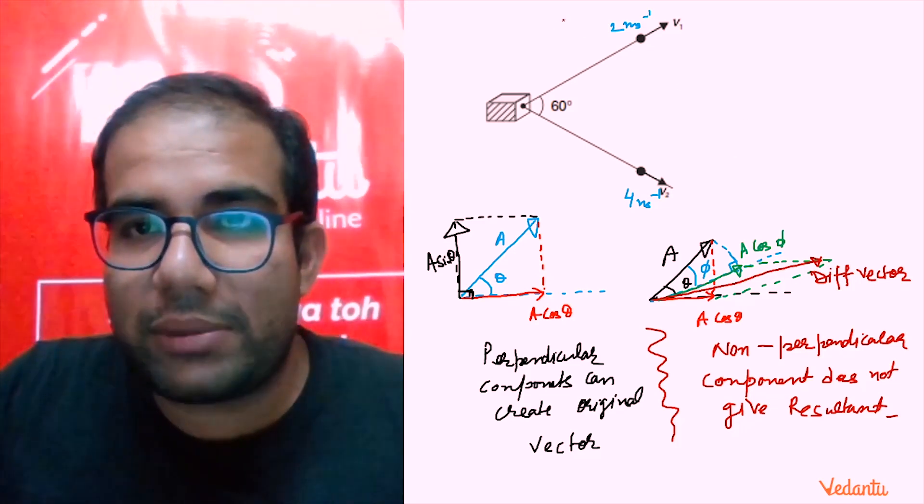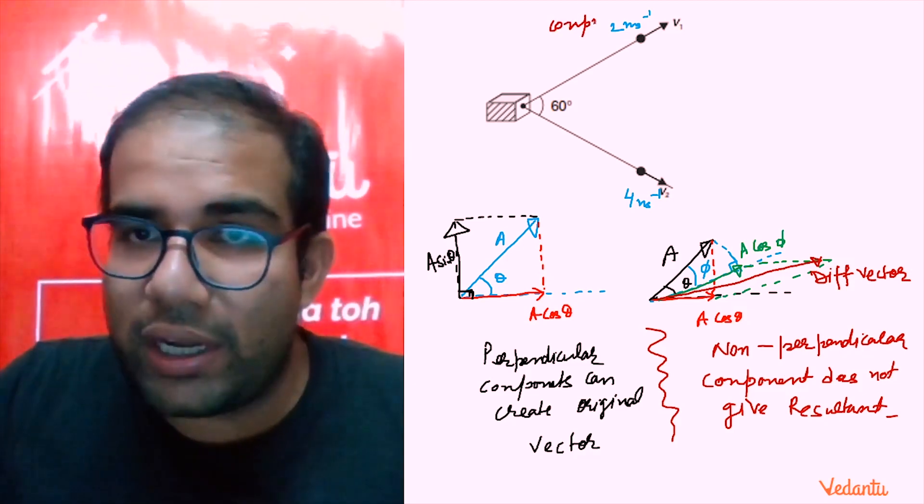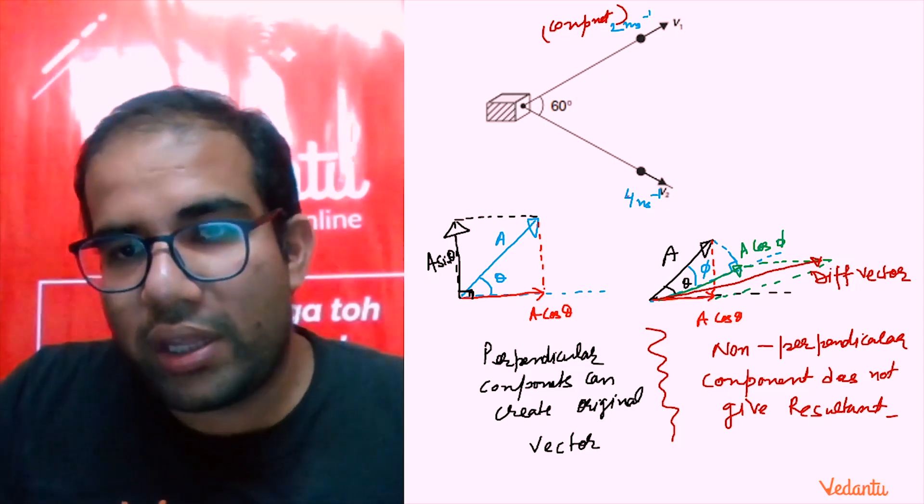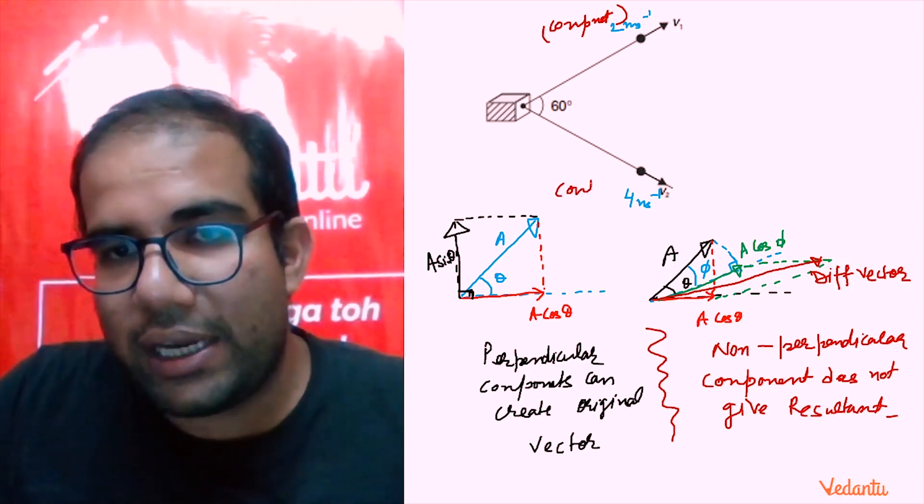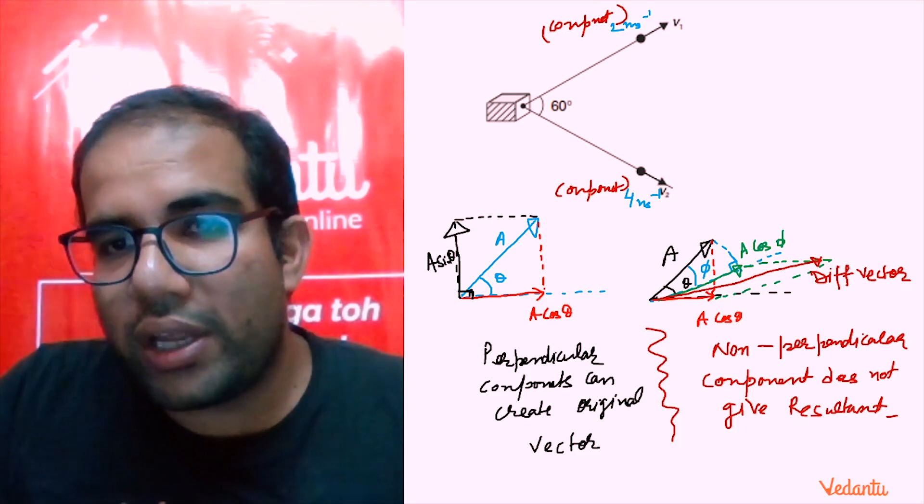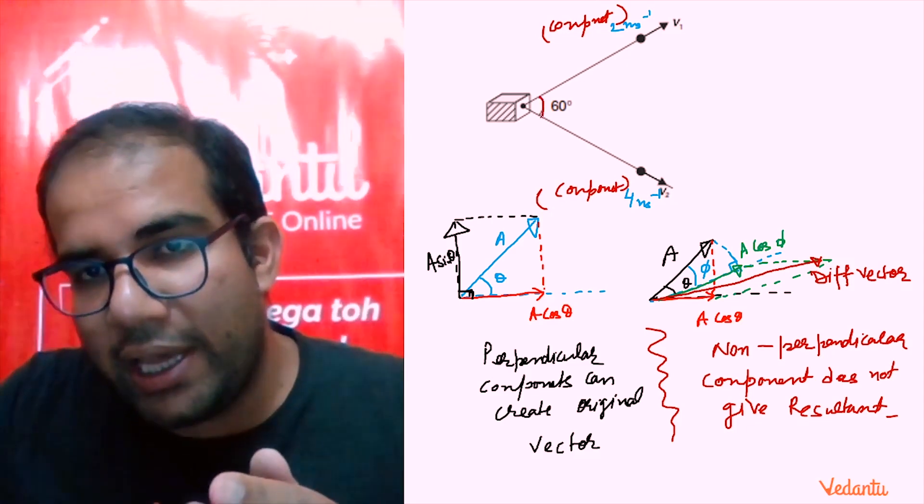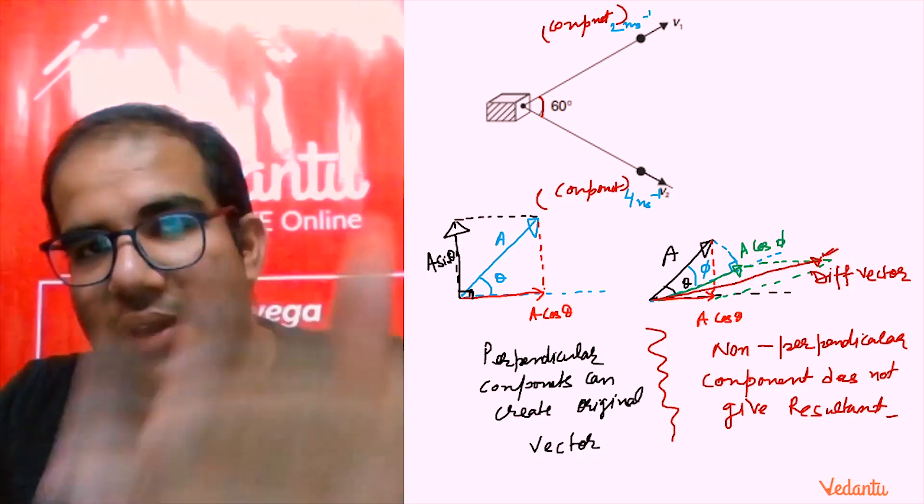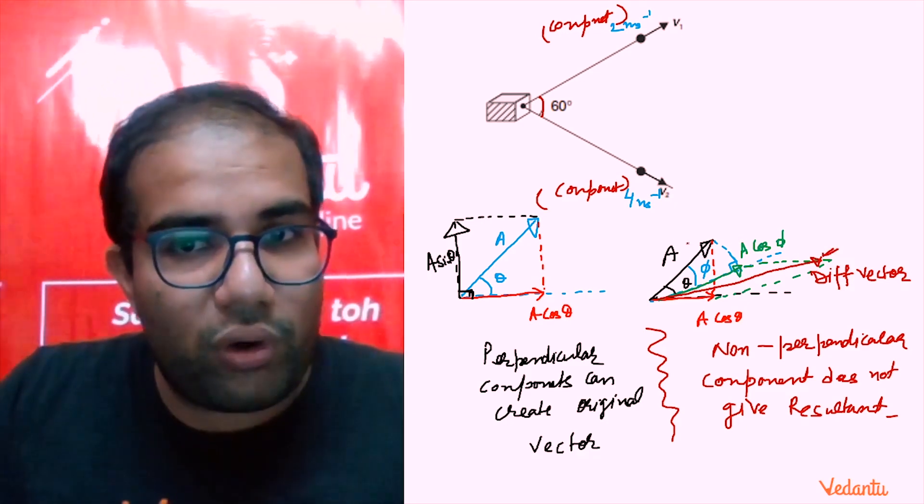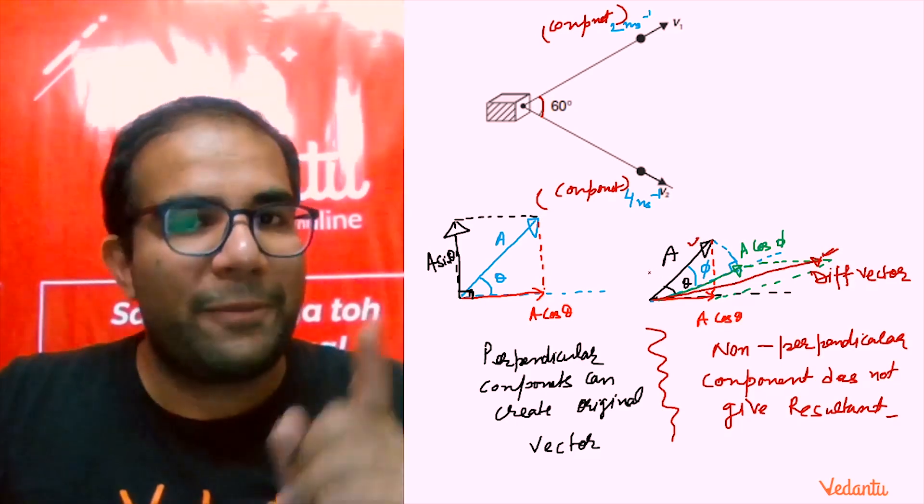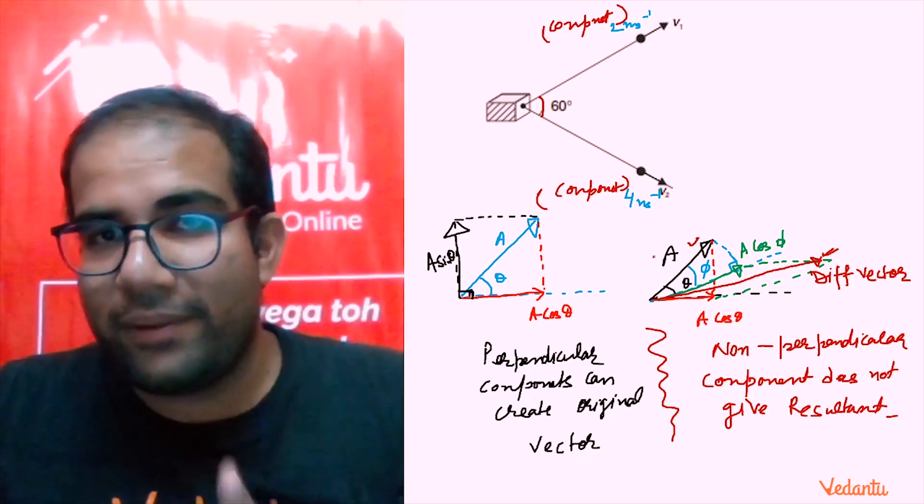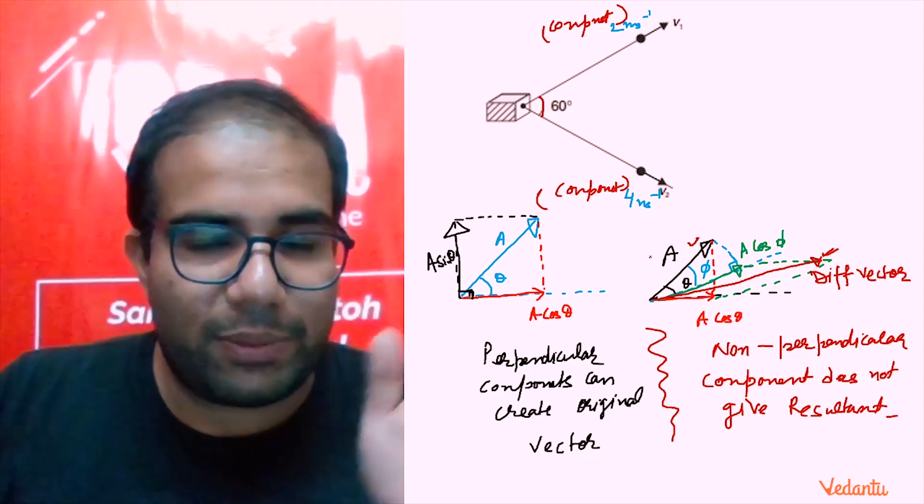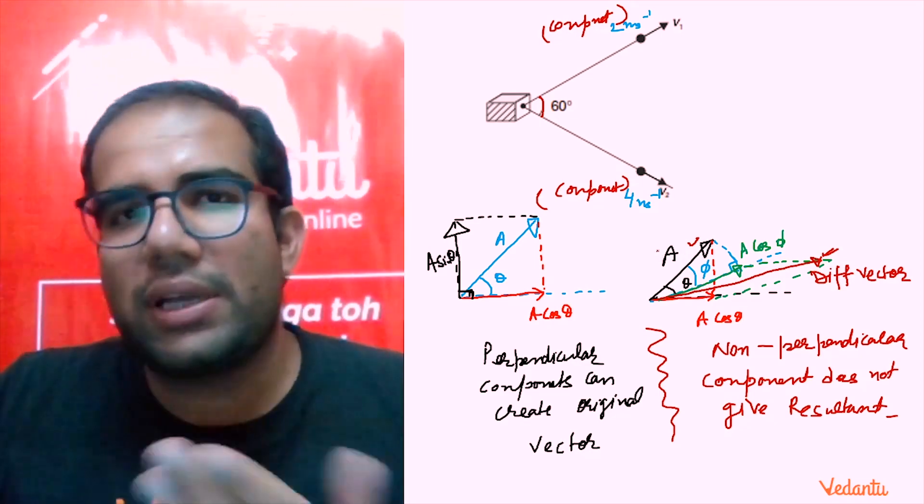What I wanted to say is that non-perpendicular components do not give the resultant. That is the logic of the question. Believe me, I have asked this question to many good students and they made it wrong. That 2 and 4 will not give me the net velocity. Why? Because this 2 meter per second is a component, it is not net velocity. It will be a component of net velocity in this direction. And this 4 meter per second is also a component of net velocity. And the angle between these components is 60 degrees.